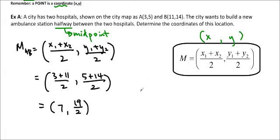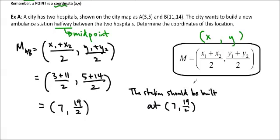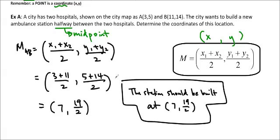So because it's a word problem, we are going to write a word solution, and then we're going to be done. So the station, the ambulance station, should be built at (7, 19/2), and that will be exactly halfway between the two stations, or the two hospitals.